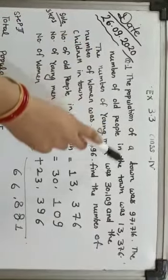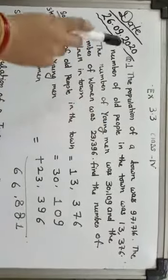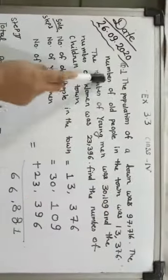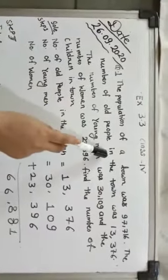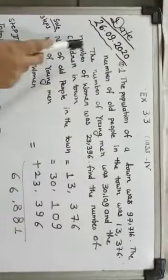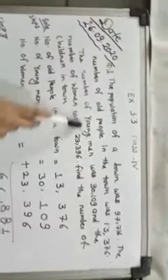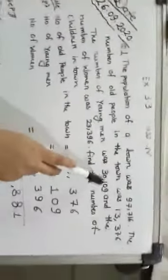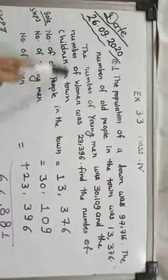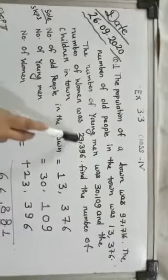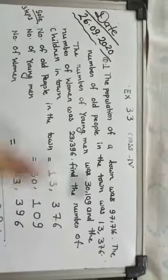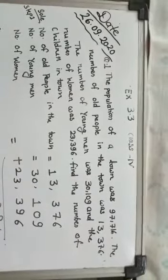The population of a town was 97,760. The number of old people in the town was 13,376. The number of young men was 30,109. And the number of women was 23,396. Find the number of children in the town.